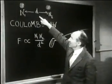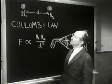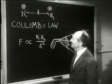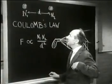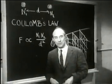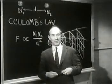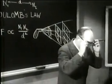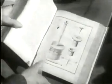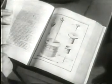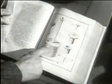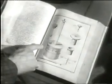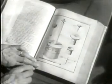Un secolo dopo l'ipotesi di Newton che la gravitazione universale segue la legge dell'inverso del quadrato, Coulomb fece un'ipotesi analoga per le forze elettriche. Egli controllò questa ipotesi con una bilancia di torsione del tipo di quella usata da Cavendish per l'esperienza sulla legge di gravitazione. Eccola qui: il filo, l'asta girevole, due palline che portano le cariche.